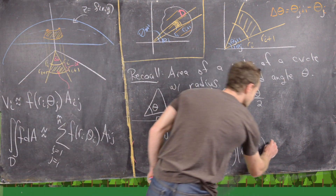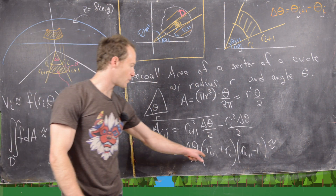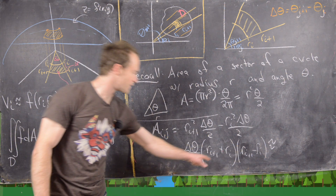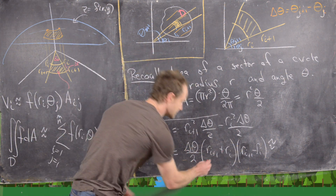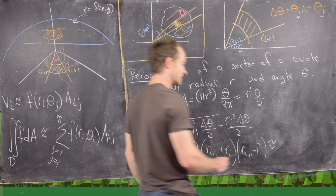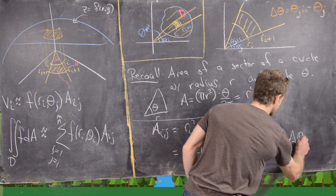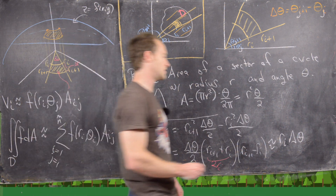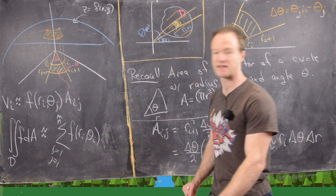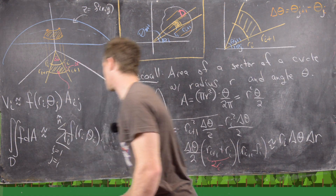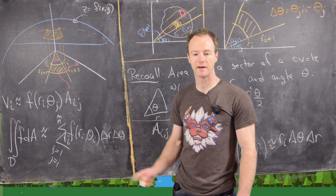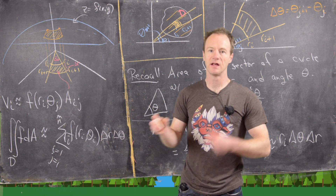Since r_i and r_{i+1} are very close to each other, r_{i+1} + r_i ≈ 2r_i. The 2s cancel, and we get A_ij ≈ r_i · Δr · Δθ, where Δr = r_{i+1} − r_i. So we can go back and replace the A_ij term with r_i · Δr · Δθ. Notice the differential area component in polar coordinates picks up an extra factor of r compared to Δx·Δy in rectangular coordinates.